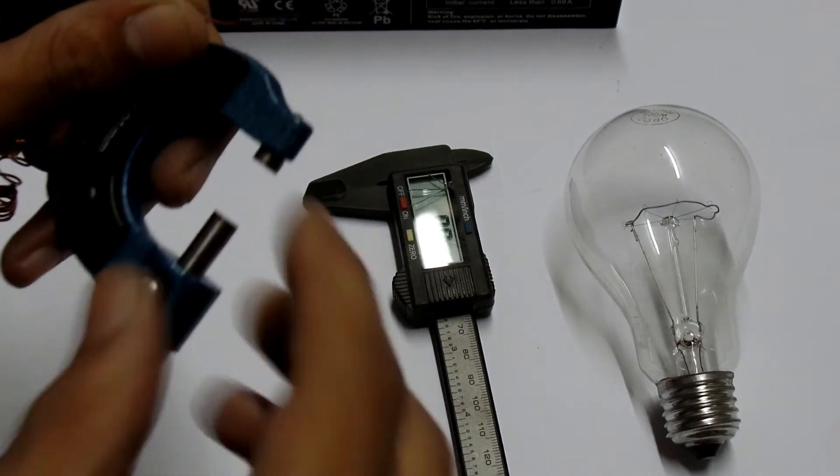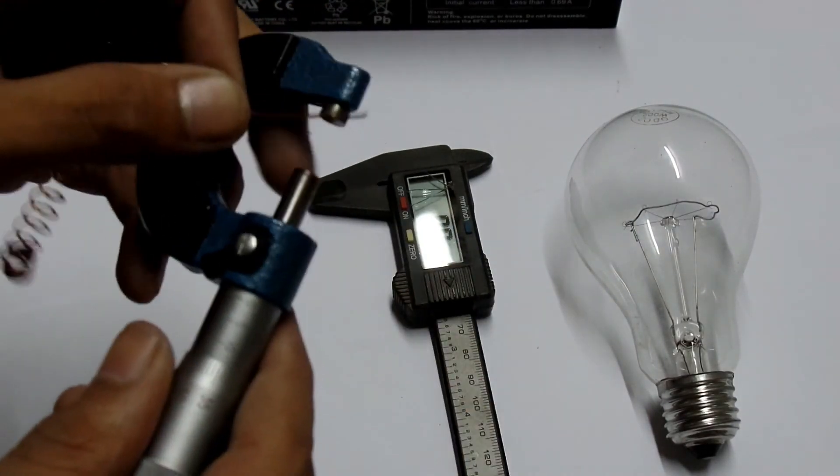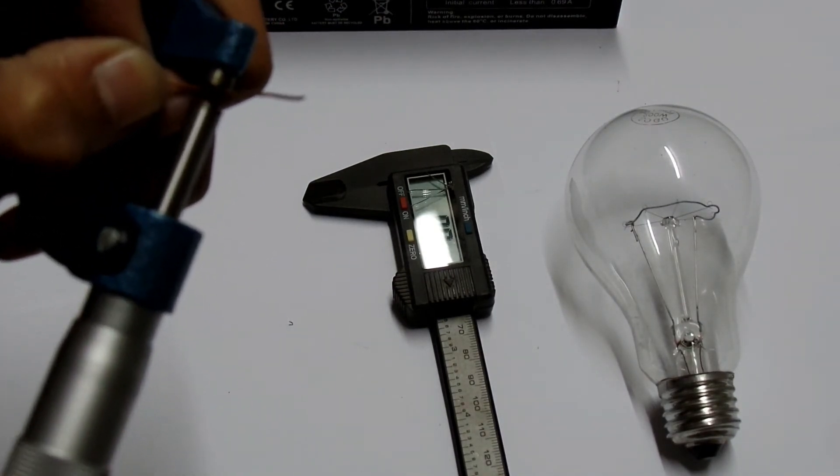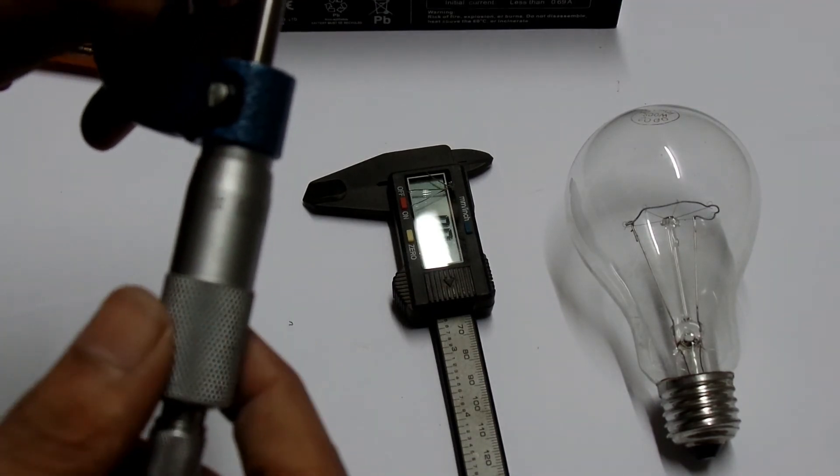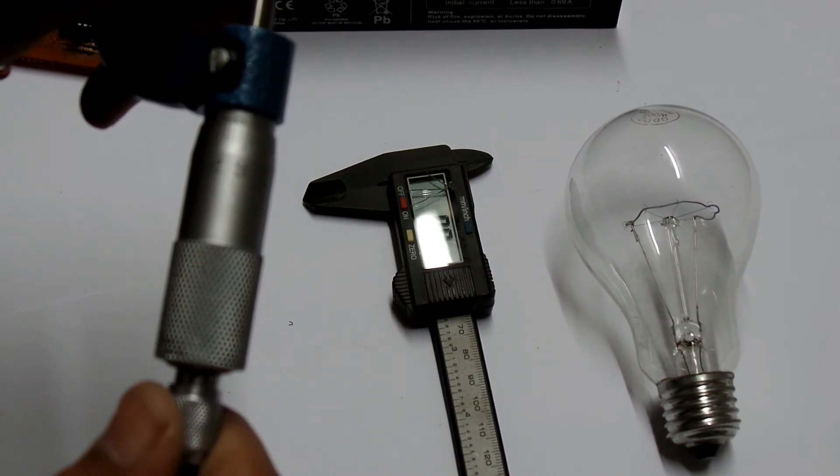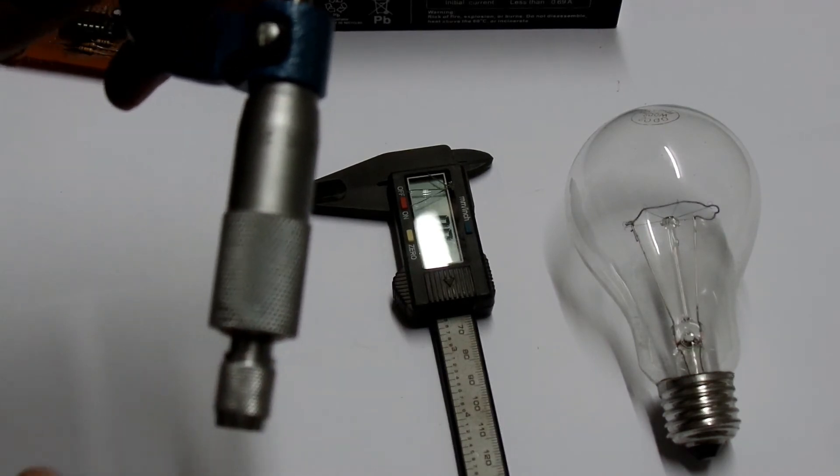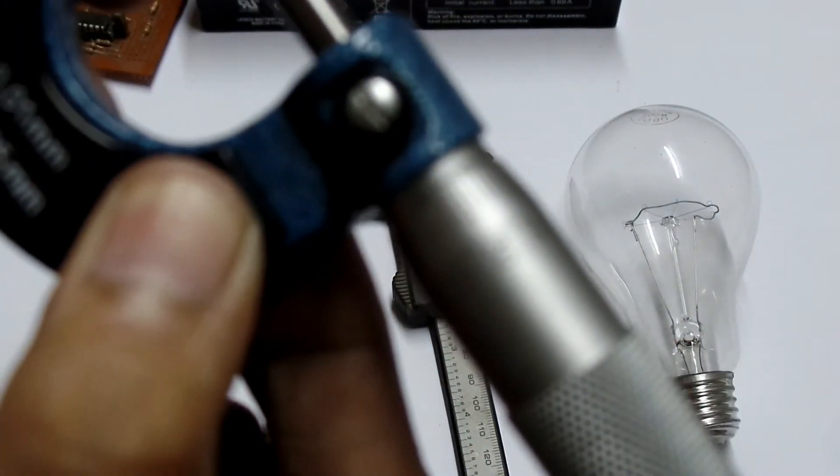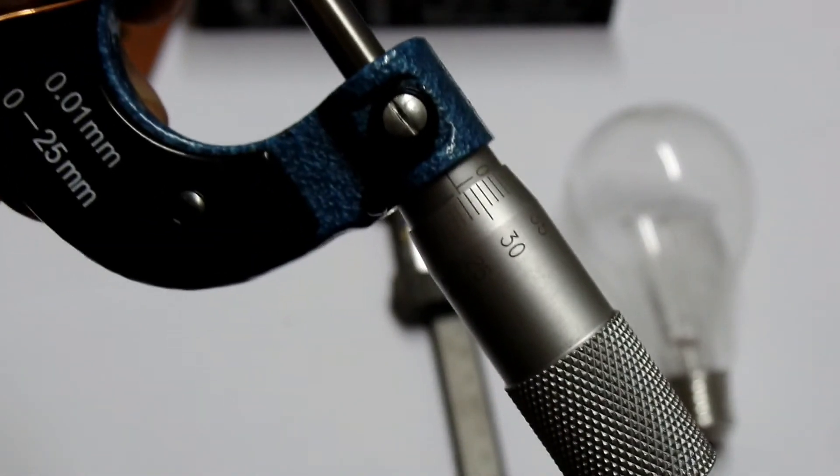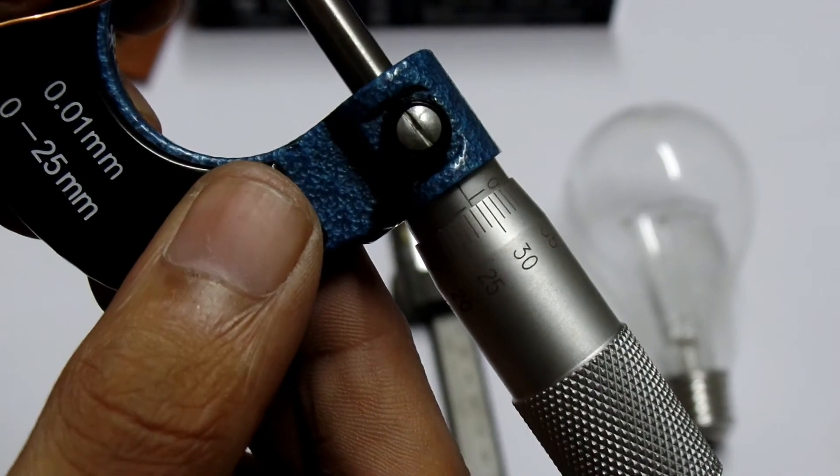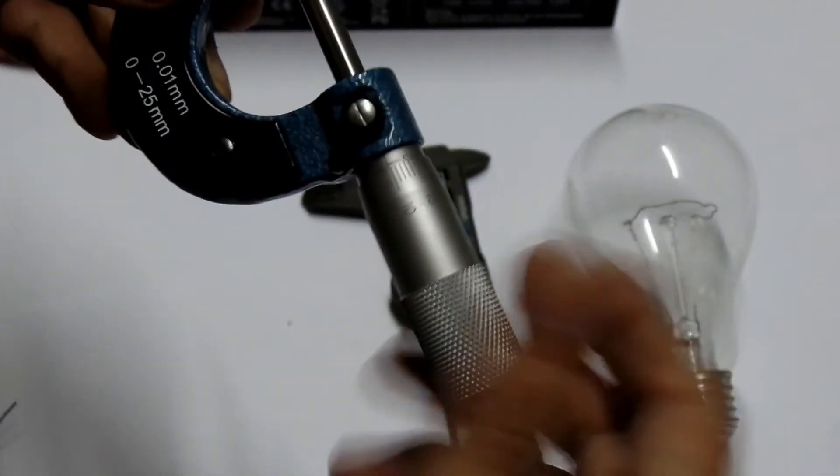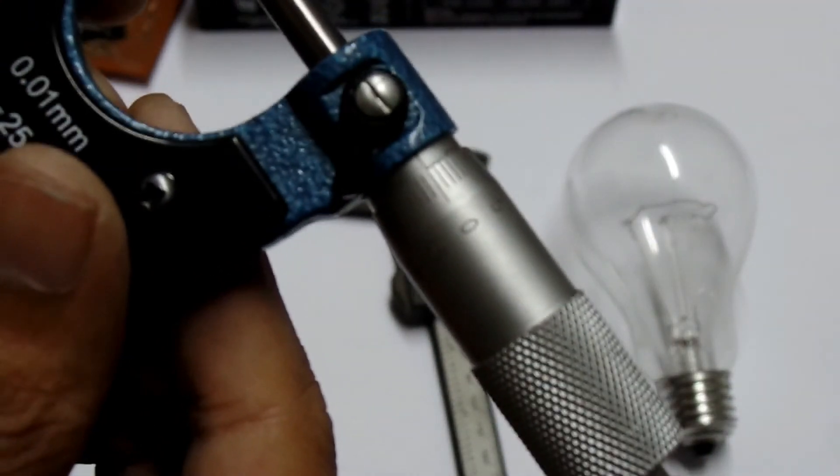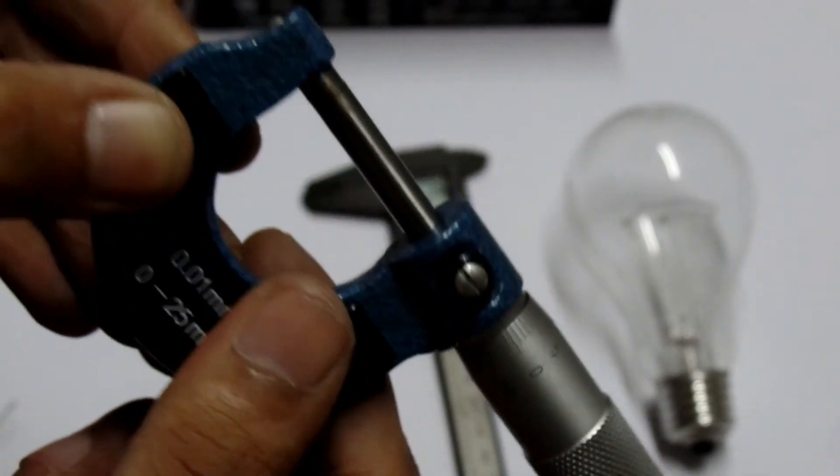Let's test it also on this micrometer. Let's clean it first. However, this is not the best way to clean it up. Let's take a look of it. Three clicks on the ratchet, and let's see the value. The camera can focus. Approximately near to what the Vernier caliper was telling.